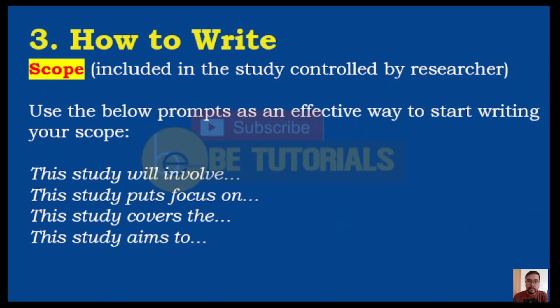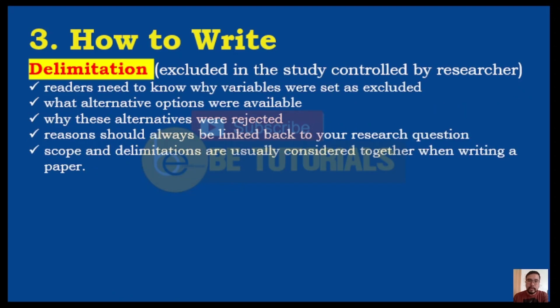We may use the following phrases to start the discussion for the scope. When we say delimitation, it is still controlled by the researcher, but this pertains to those that the researcher chose to exclude. Readers need to know why those variables were set as excluded, what alternative options were available, why those were rejected, or why those variables are excluded. The researcher may also provide reasons that could be linked back to the research question for excluding those variables.